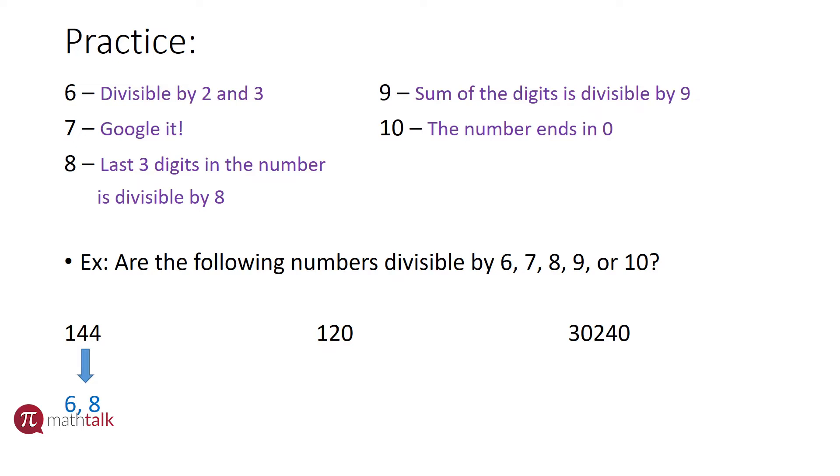If I look at nine, I need to sum the digits, and I just did that a moment ago—it's nine, and nine is divisible by nine, so 144 is divisible by nine. The easy one: 144 does not end in zero, so it is not divisible by 10.